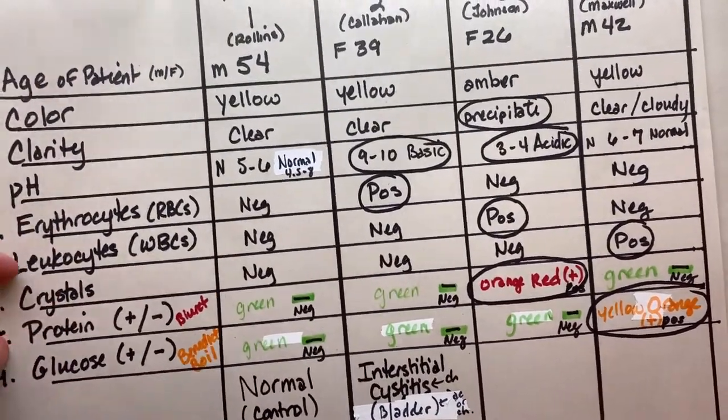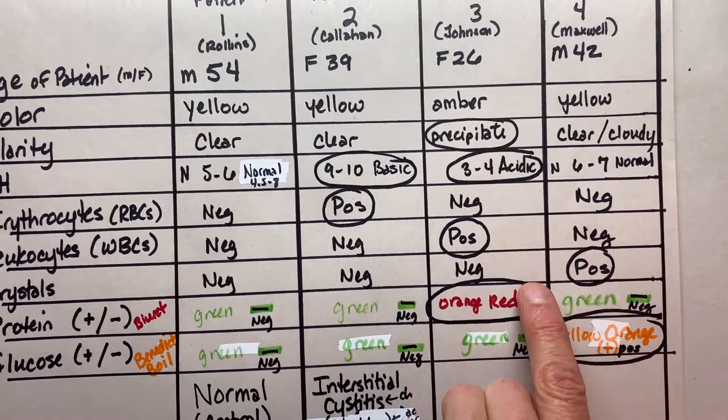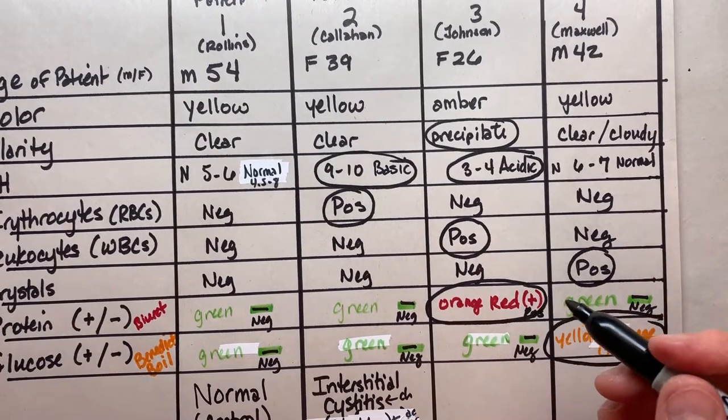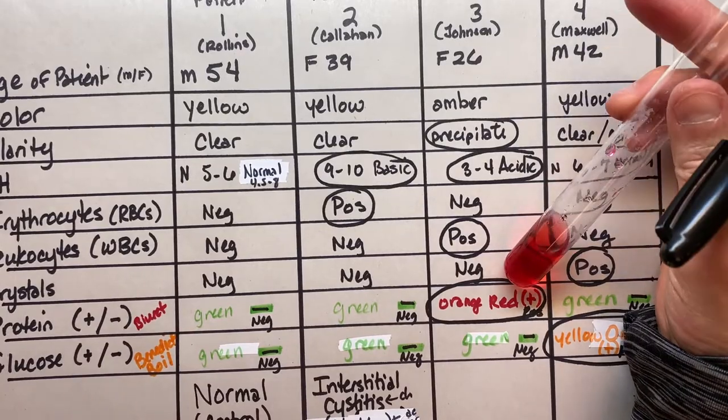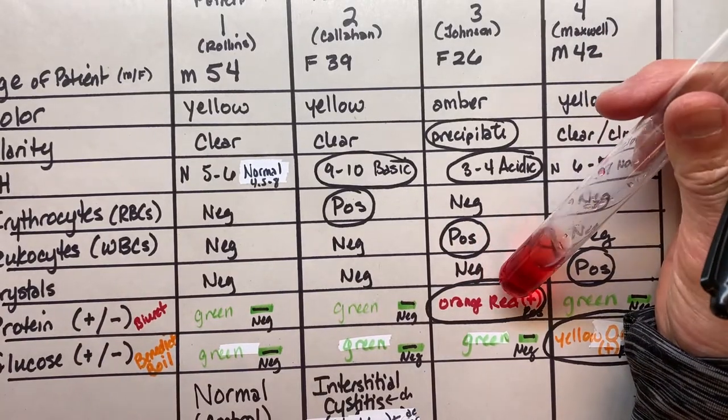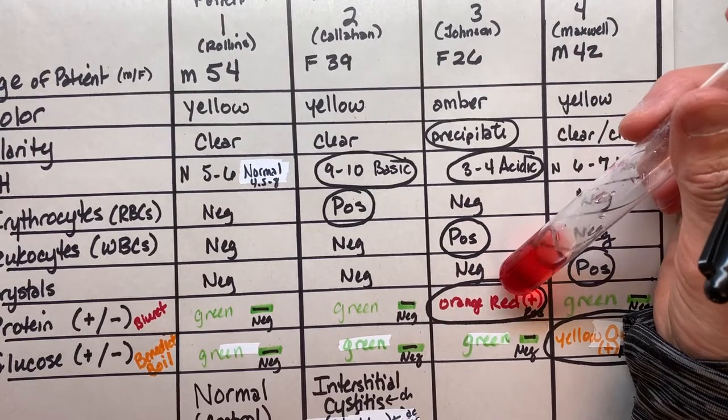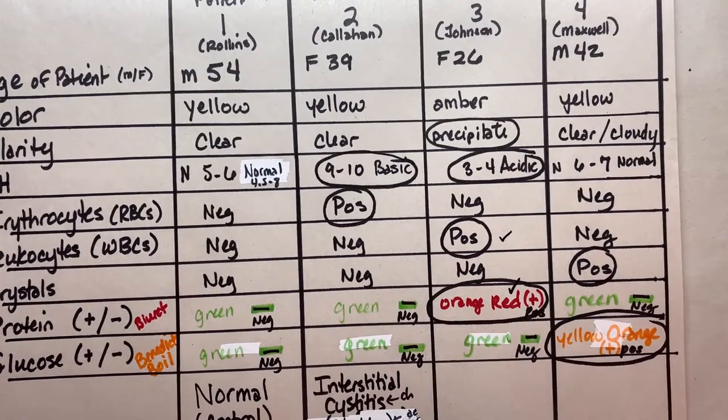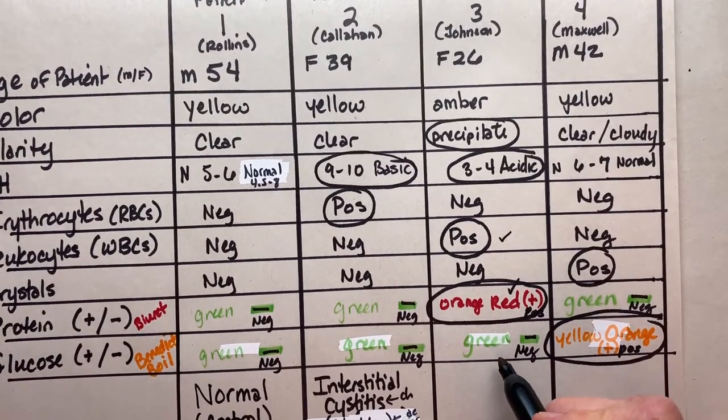That's red blood cells. Let's continue with Ms. Johnson. We had that precipitate and the three to four acid pH. We've got no red blood cells, but we do have leukocytes. And her urine was this deeply orange-red color when we tested it for protein. Her Biuret test was very positive - a distinct positive for protein. So she's got two things going on: white blood cells and protein. We need to come up with two possible reasons, at least two - one for each of those. She's negative for sugar.